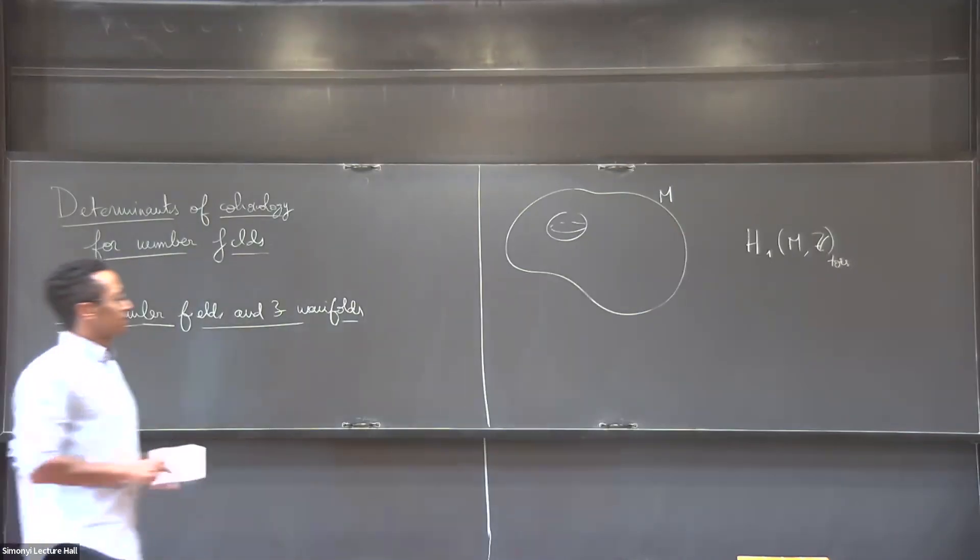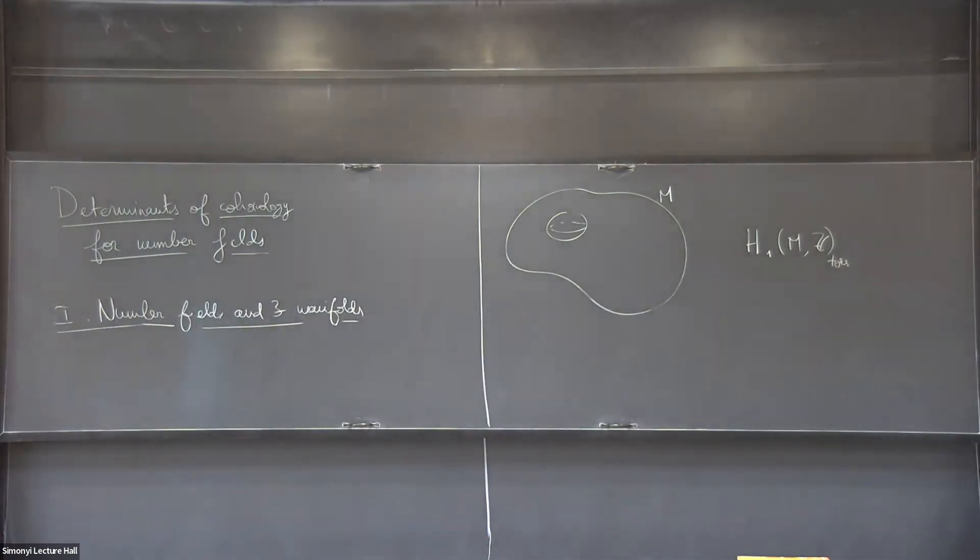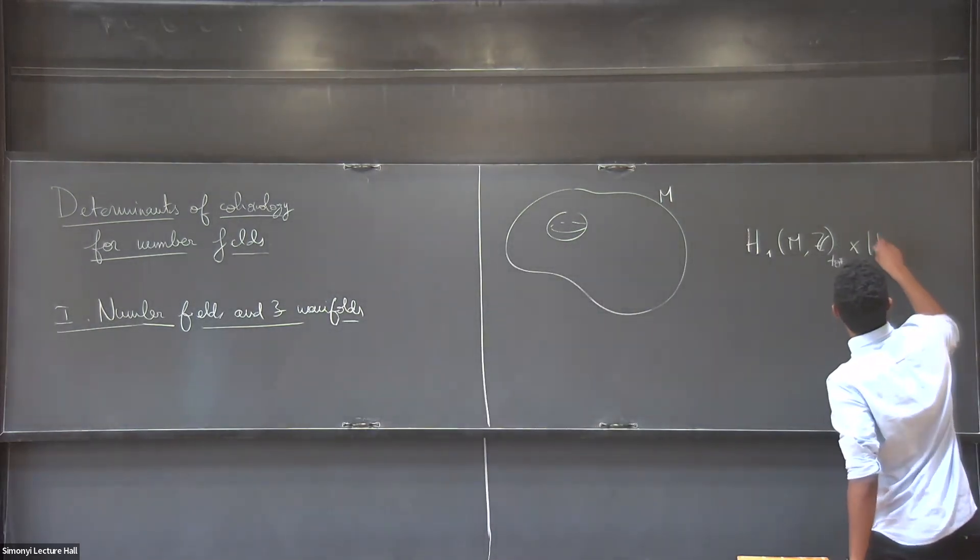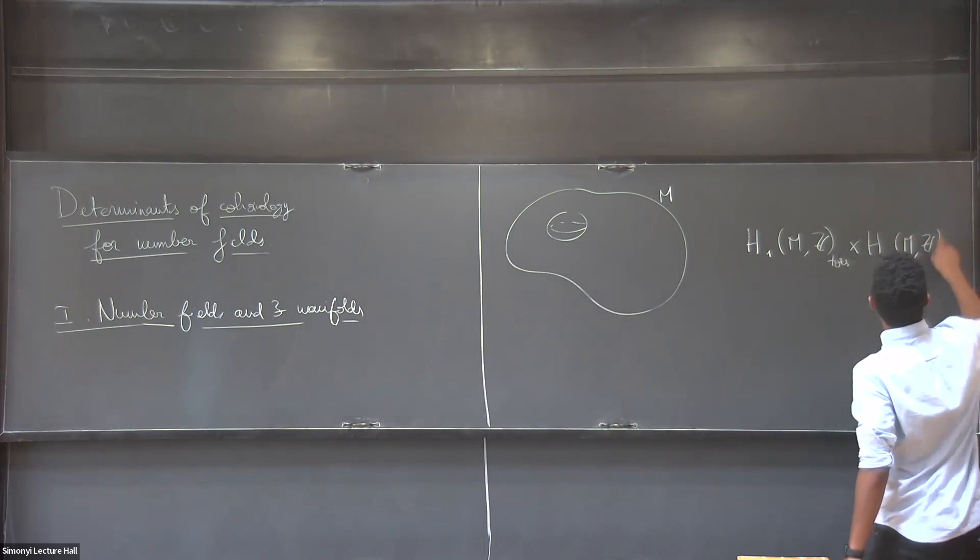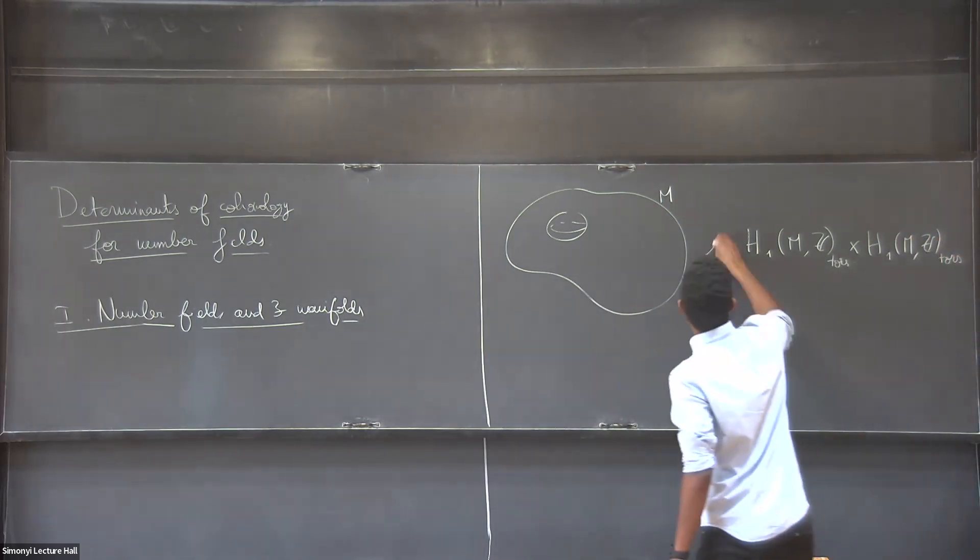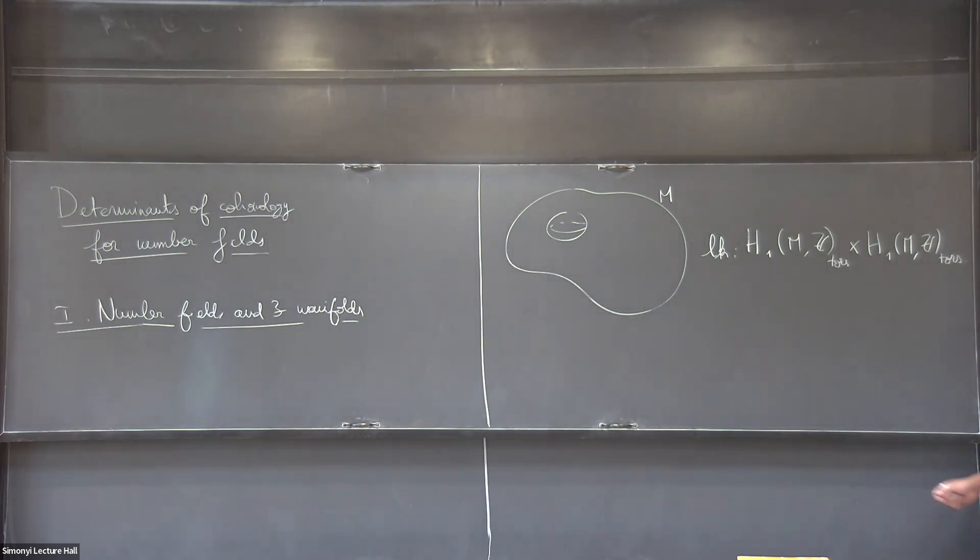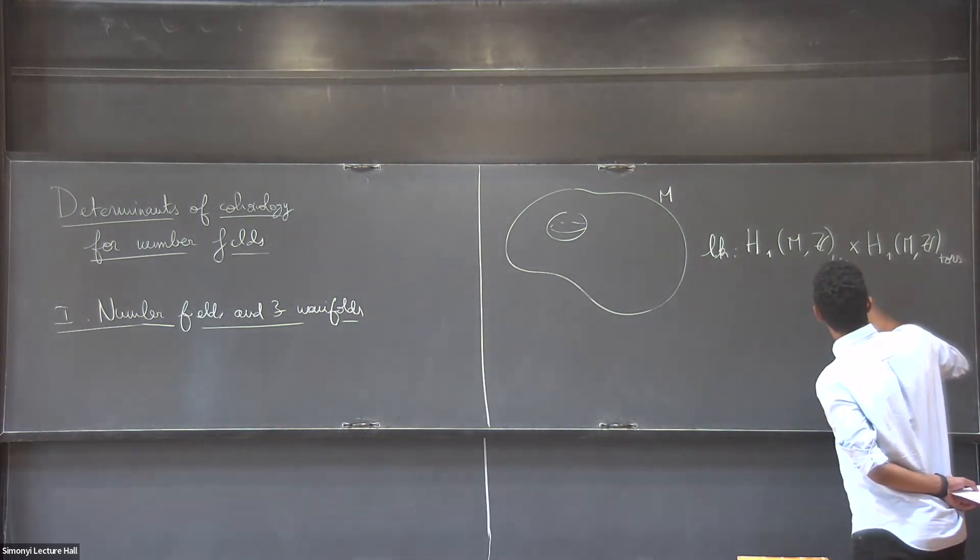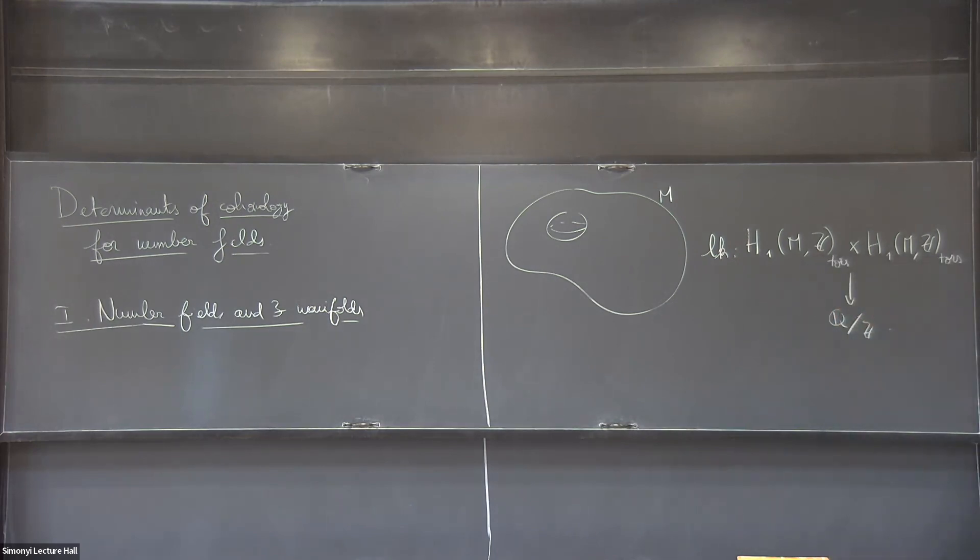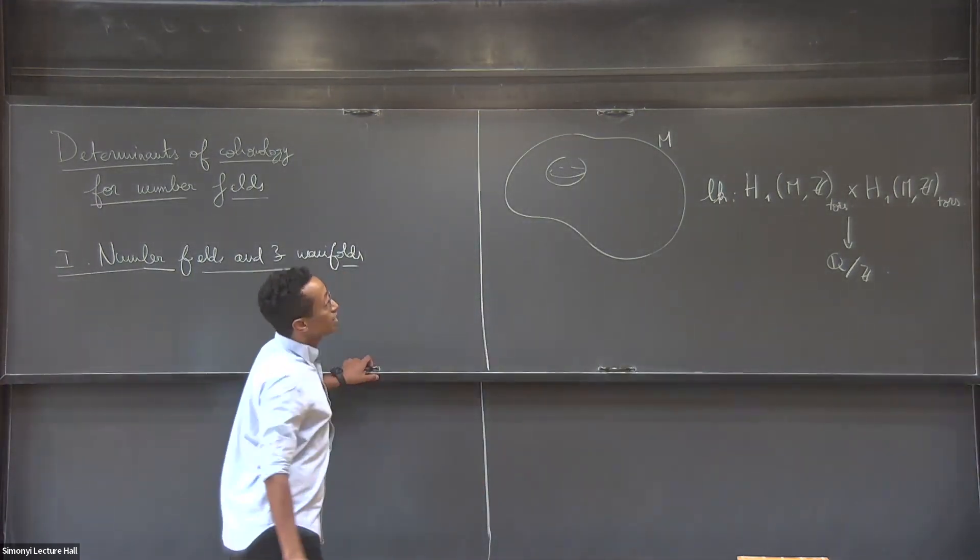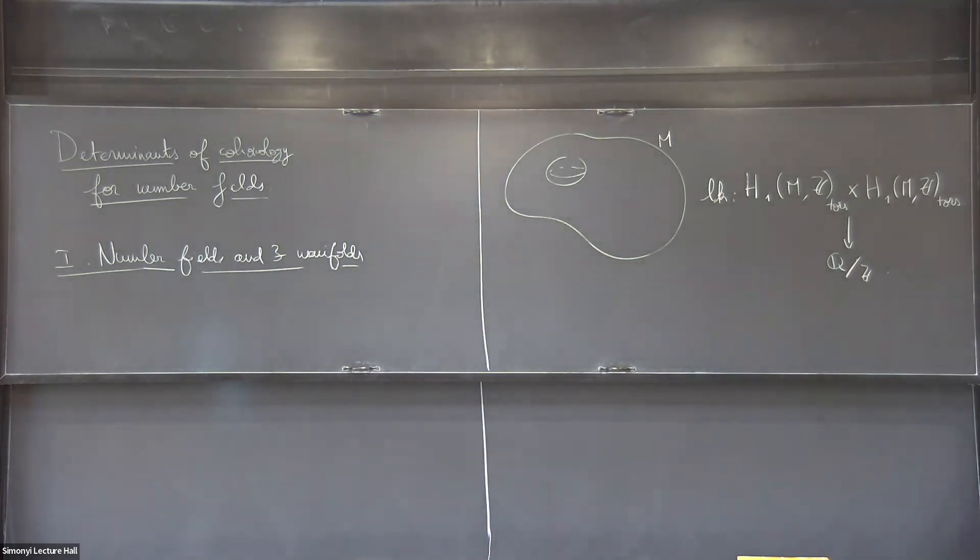Okay? So you can think of these things as formal sums of circles with a relation that a circle is zero if it bounds some surface embedded in the manifold. And these cohomology groups actually come with a bit more structure. I'm going to talk about one extra bit of structure that they come with. It's something called the linking pairing. The linking pairing is going to be a bilinear map from the torsion homology of your three-manifold with values in Q mod Z. The way to define this linking pairing is that you want to count how often one circle loops around another.